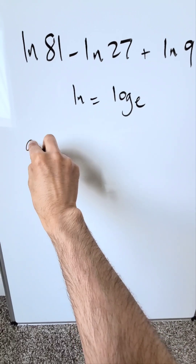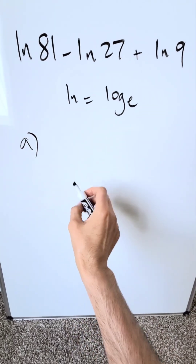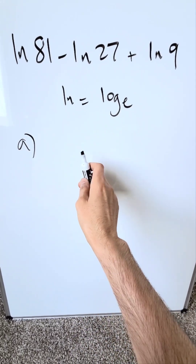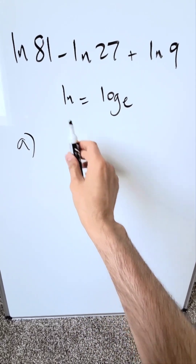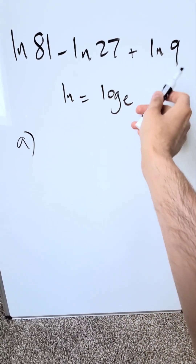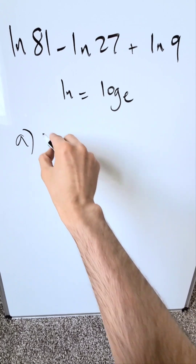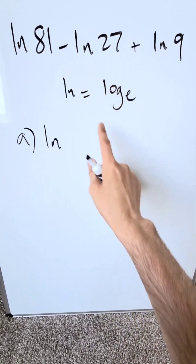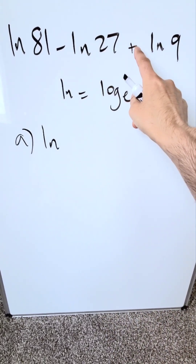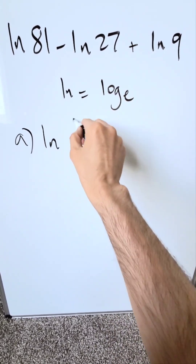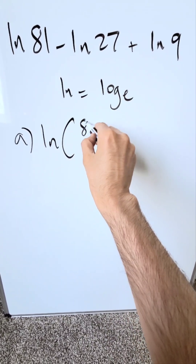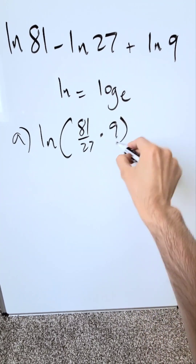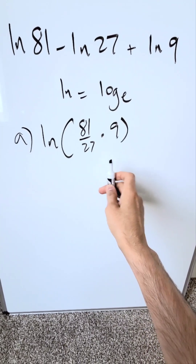You can do it in multiple ways. I'll show you two ways. Way number one, the easier way: bring these independent logs under a common log. The difference will become a quotient and the sum will become a product. We're looking at 81 over 27 as the quotient, times 9 as the product.